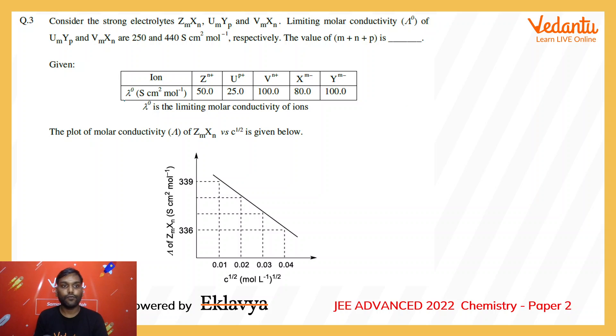For the two salts U_M Y_P and V_M X_N, the value of lambda naught is given. We can use Kohlrausch's law to write the expression of lambda naught in terms of the limiting molar conductance of the ions. For the first: 250 = M × conductance of U, which is 25...